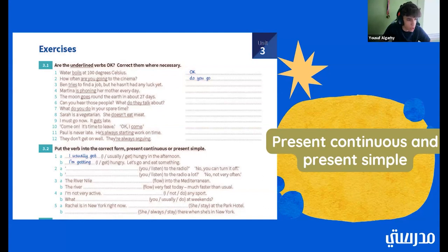Now, for the next part, we have to put the verb into the correct form. It could be either present continuous or present simple. So number one, the example is I usually get hungry in the afternoon. And then number two, we have I get hungry. Let's go eat something. And they change it to I'm getting hungry. Let's go eat something. So number two, for A, it says you listen to the radio. No, you can turn it off. So what would we want to put for A? Are you listening? Good. Number and then part B. It says you listen to the radio a lot. No, not very often. Do you listen to the radio a lot? Good.